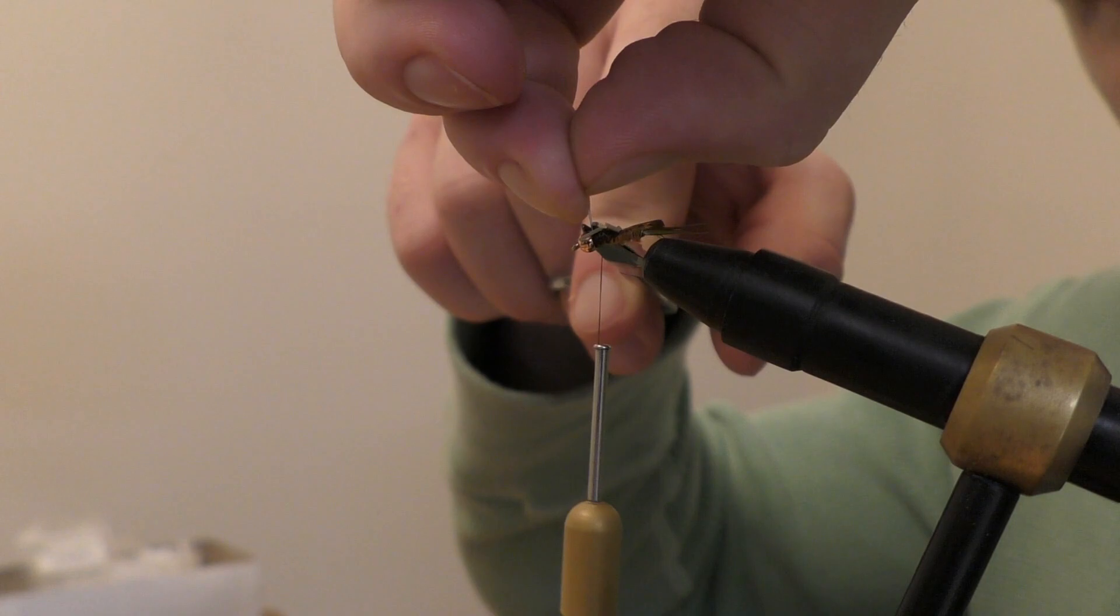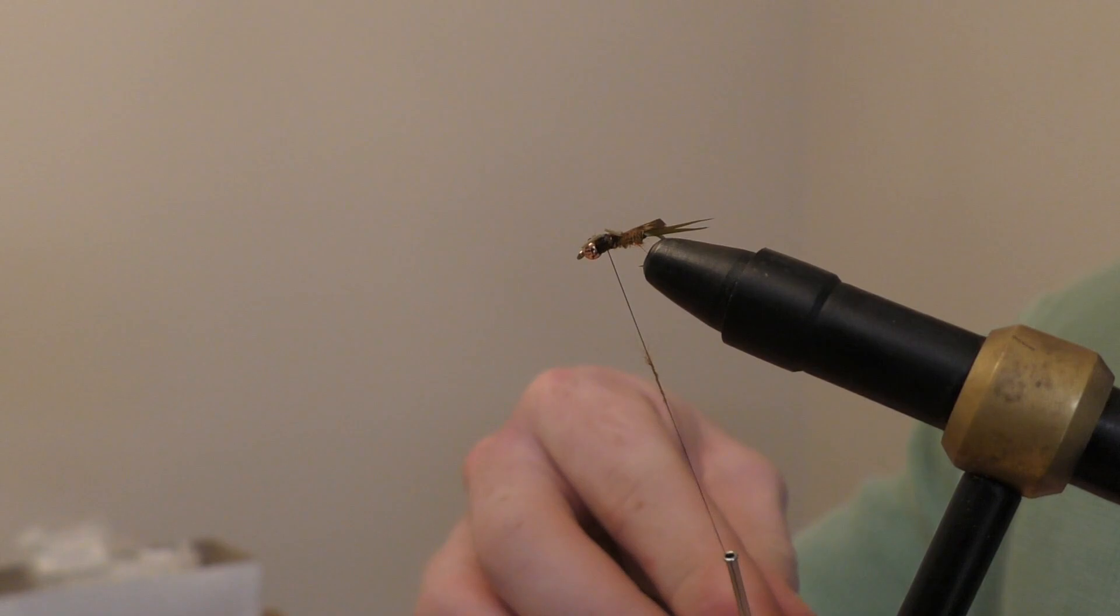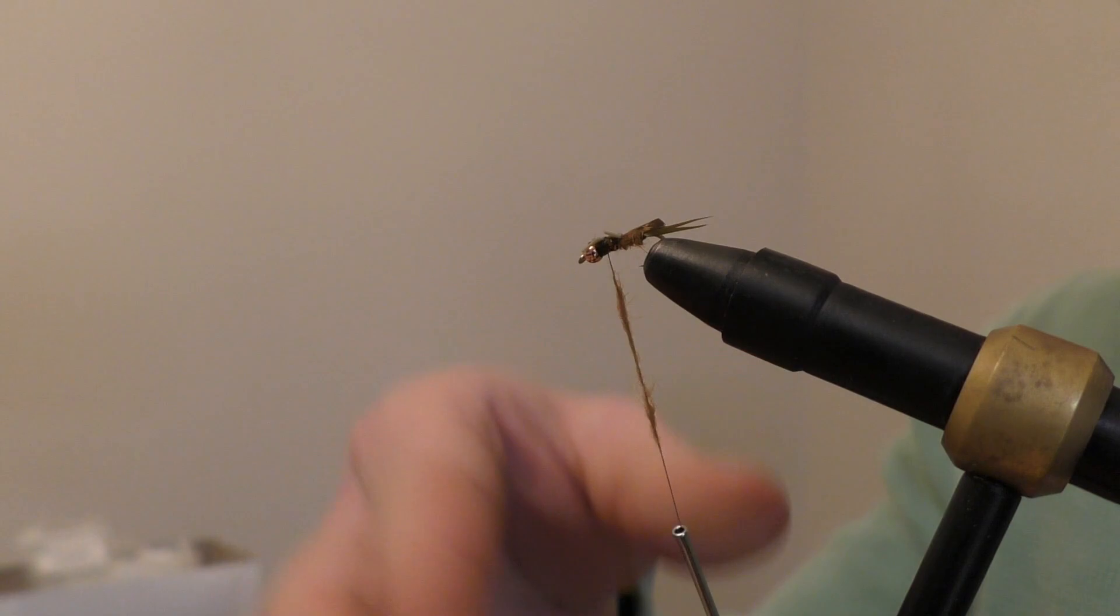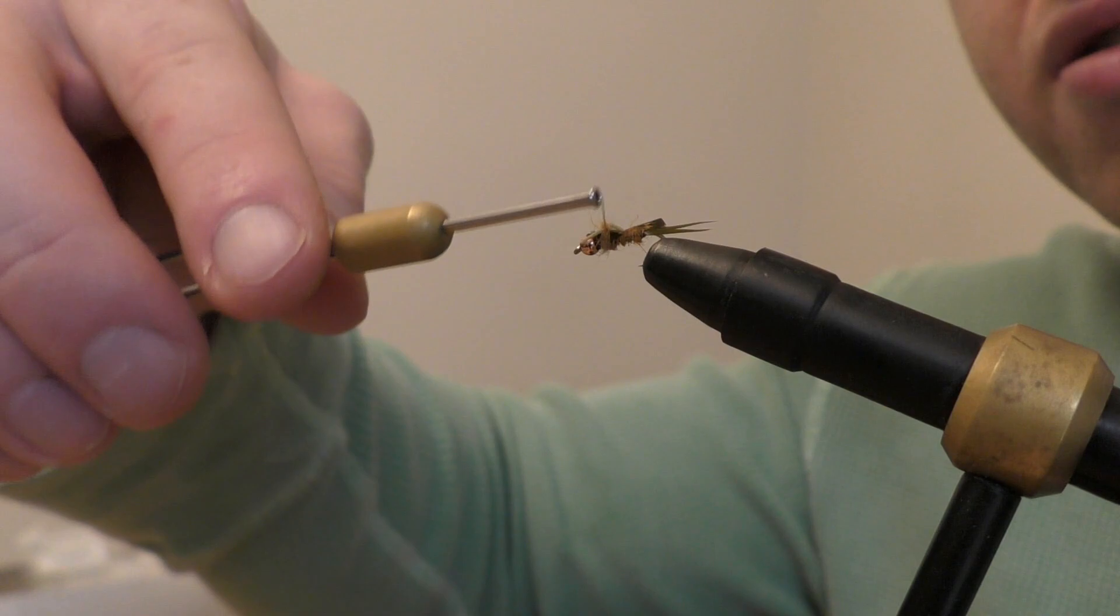Then go back to your dubbing and put just a very very small amount. Now this particular pattern I did a little on the heavy side, but that's okay—you can save these for the faster water where the trout have less time to look at your fly. That's about good there. You're just trying to build it up a little bit.